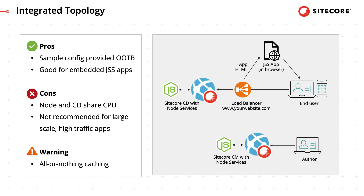That's why this topology doesn't scale as well as the other options. Generally, this topology is only good for scenarios where the JSS app is embedded into one page. In this case, treat this exactly like a normal MVC topology when it comes to scaling, except that all CDs need one node process. Integrated mode is not recommended for high traffic production scenarios because of its scaling limitations. Additionally, since node server-side renders the entire page as a block and not as individual renderings, traditional output caching mechanisms become all or nothing.